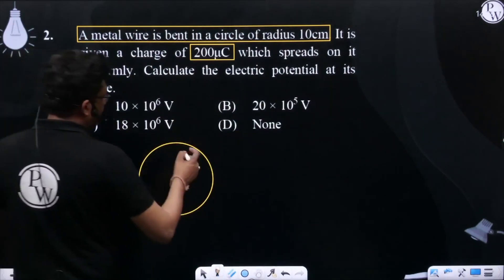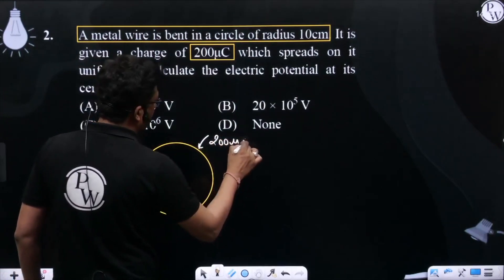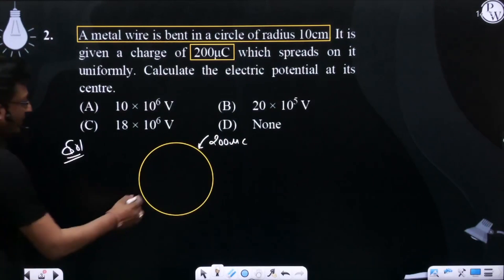This is a ring with 200 microcoulombs charge on it, and it is uniformly distributed.